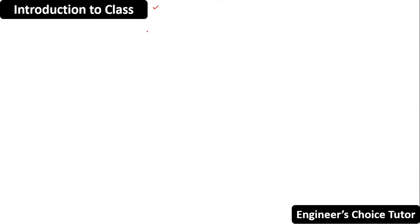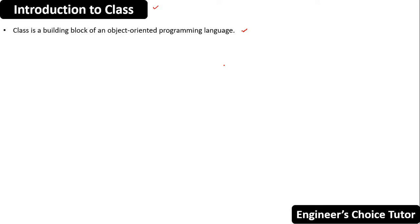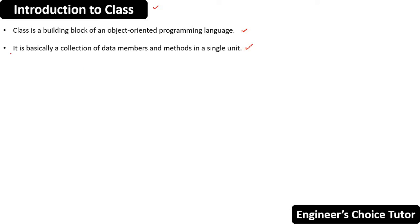Class is the building block of an object-oriented programming language. Basically, class is nothing but a collection of data members and methods in a single unit. This is what a class.